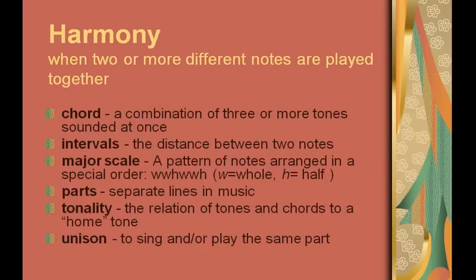Harmony is when two or more different notes are played together. A chord is a combination of three or more tones sounded at once. An interval is the distance between two notes. A major scale is a pattern of notes arranged in a special order. Parts are separate lines in music. Tonality is the relation of tones and chords to a home tone. Unison is to sing and/or play the same part.